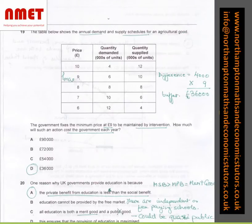Question number 19 is a straightforward mathematical question. The table below shows the annual demand and supply schedule for an agricultural product. The government fixes the minimum price at 9 pounds to be maintained by intervention. How much will an action cost the government each year? We know at 9 pounds, the demand is 6, the supply is 10. So 4,000 spare units, 4,000 times 9 is 36 grand. Hence, D is the answer.